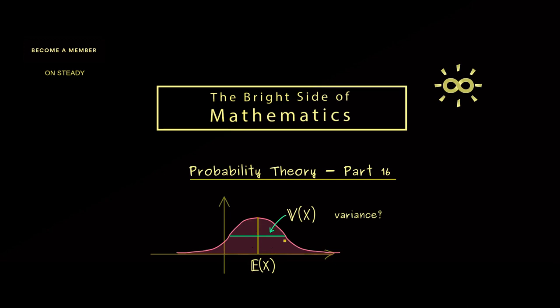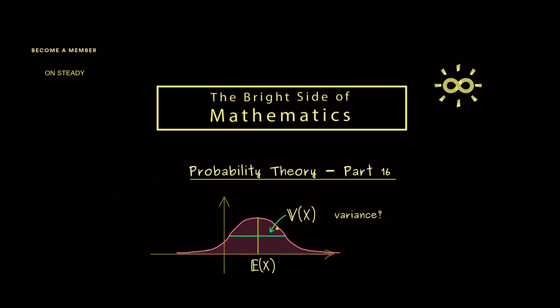You might already see there could be a lot of different ways to measure it. However, the variance is the standard way because it has a lot of nice properties. With this, let's immediately start with the definition.